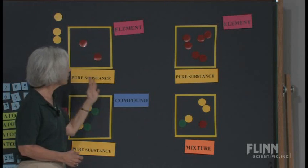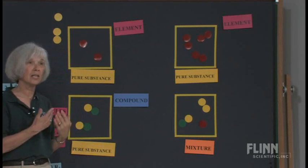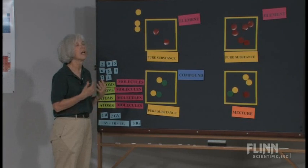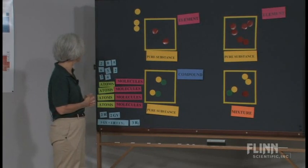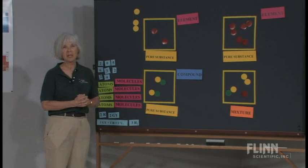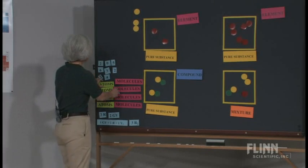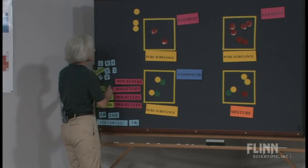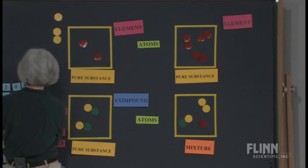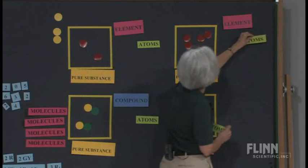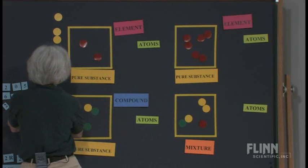We don't use that classification with the mixtures here. We are just taking those substances that are pure substances and classifying them as elements versus compounds. Now, I like them to be able to count up and identify what is actually in the box. So we're going to determine how many atoms are in each container, and then we're also going to determine how many molecules are in each container.